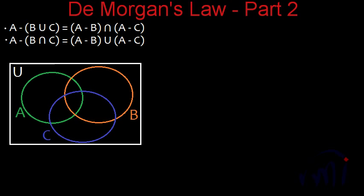So let me draw a Venn diagram. This rectangle represents the universal set. The ellipse in green represents set A, the ellipse in orange represents set B, and the ellipse in blue represents set C. Now if we see the first part of this law, it says A minus B union C.